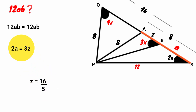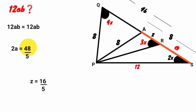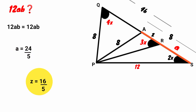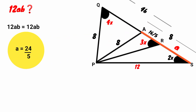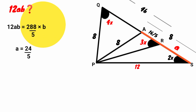Substituting the value of Z: 3 times 16 over 5 is 48 over 5. We can write 48 over 5 as 2 times 24 over 5, and the 2 cancels, so A equals 24 over 5. Now we have A equals 24 over 5 and Z equals 16 over 5. Since A equals 24 over 5, substituting: 12 times 24 over 5 is 288 over 5. So the expression becomes 288 over 5 times b.